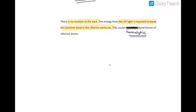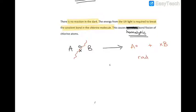We have already covered homolytic bond fission. Homolytic bond fission is when the covalent bond splits in an equal, even way. So if you have two atoms, A and B, that are covalently bonded, during homolytic bond fission each one gets one electron. You end up with radicals — a particle with an unpaired electron is called a radical or a free radical.